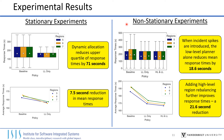In our non-stationary experiments, the average response times increase due to the synthetic incident rate spikes. Here, the low-level planner decreases mean response times by over 18 seconds compared to the baseline. In these experiments, we also introduce the high-level planner to account for incident distribution shifts. Adding the high-level region rebalancing improves mean response times by an additional three seconds when compared to the low-level planner in isolation, which indicates that it helps the system adapt to these shifts.